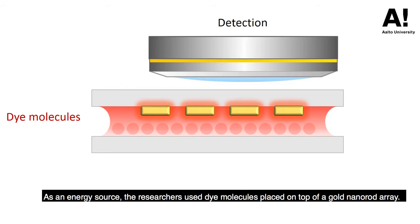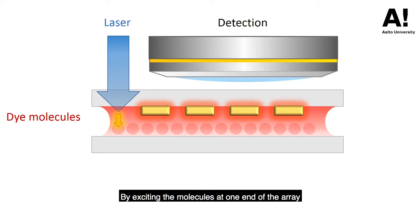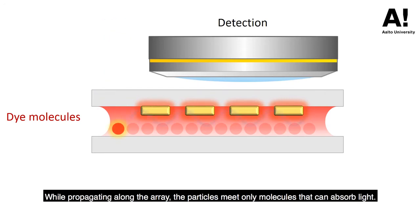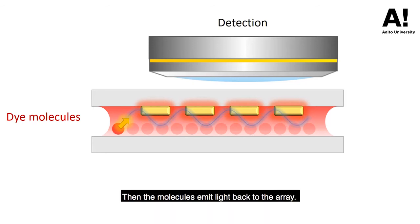As an energy source, the researchers use dye molecules placed on top of a gold nano-rod array. By exciting the molecules at one end of the array, it is possible to monitor the propagation of the particles that form the condensate. While propagating along the array, the particles meet only molecules that can absorb light. Then the molecules emit light back to the array.